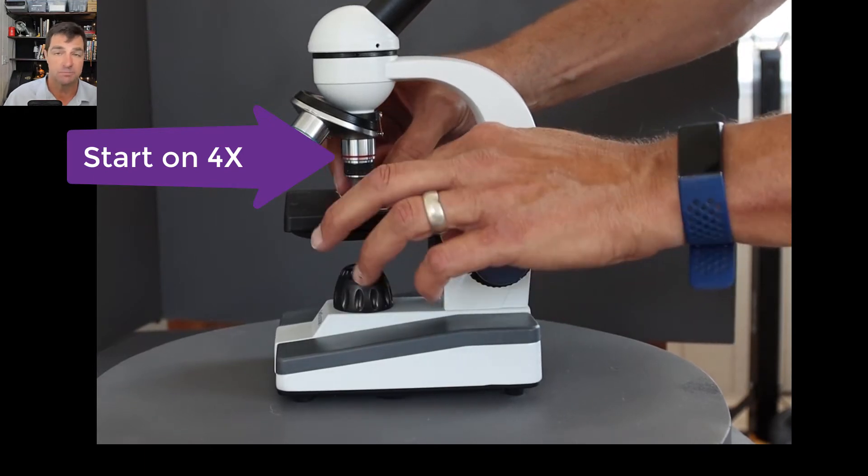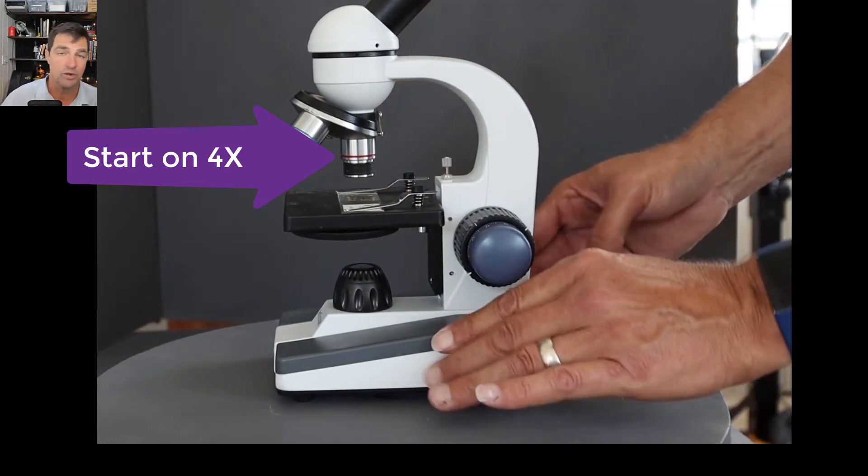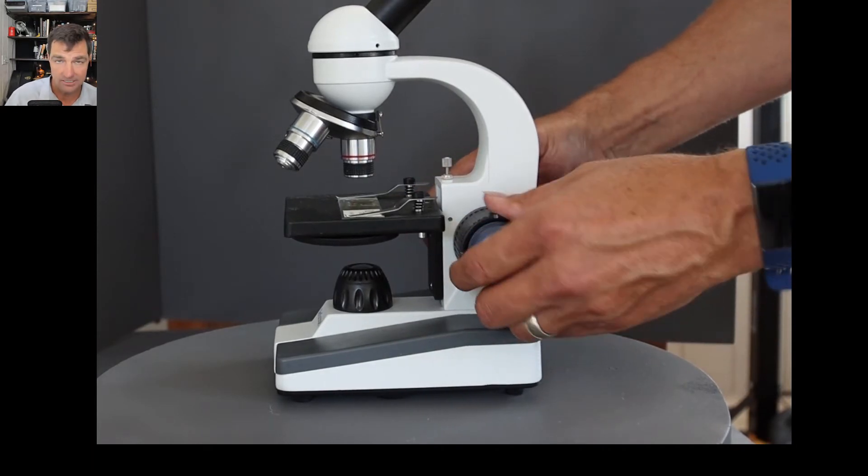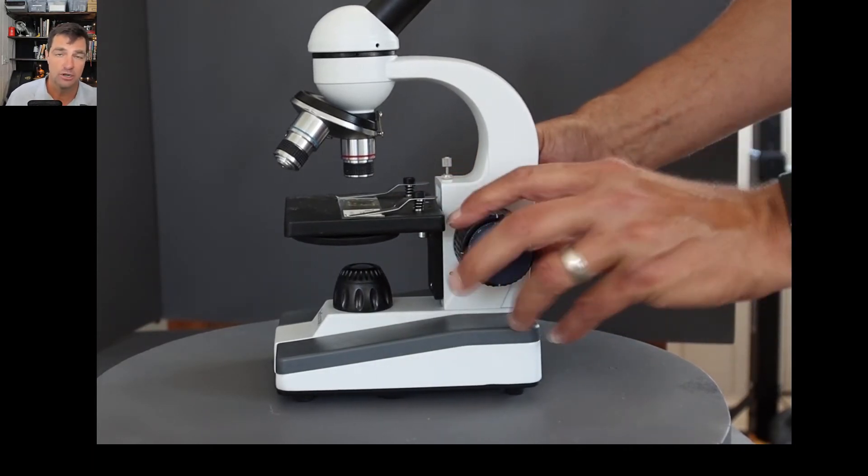In this particular microscope, it's the one with a red ring around it. It is the 4x objective lens, the shorter of the two.